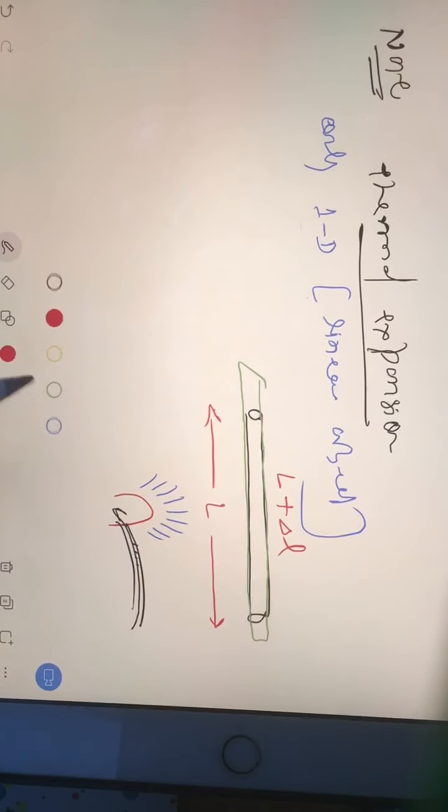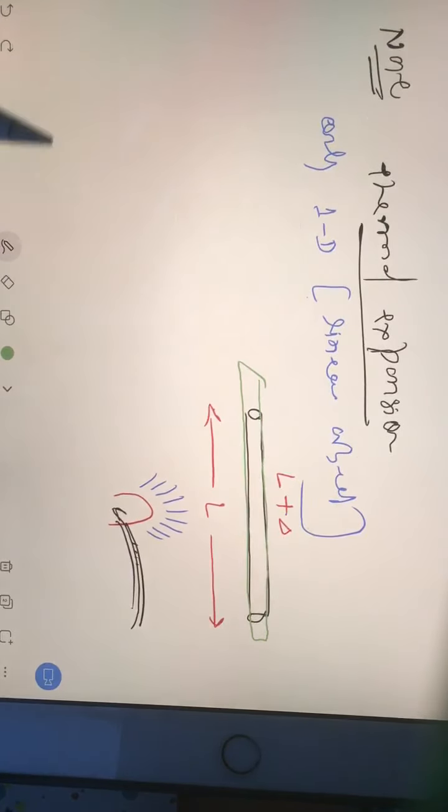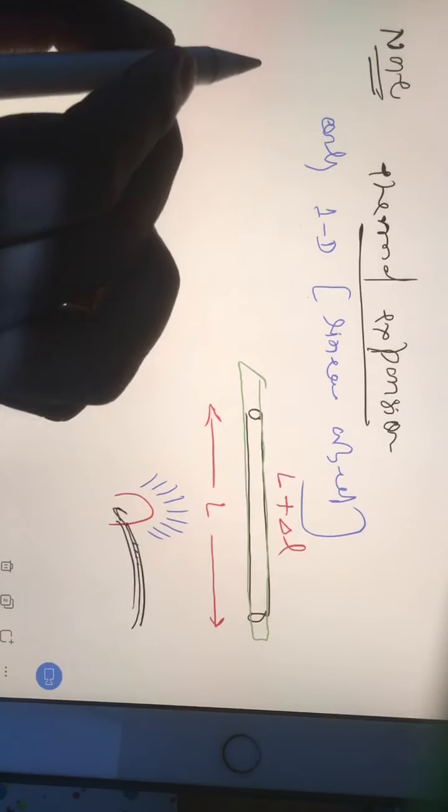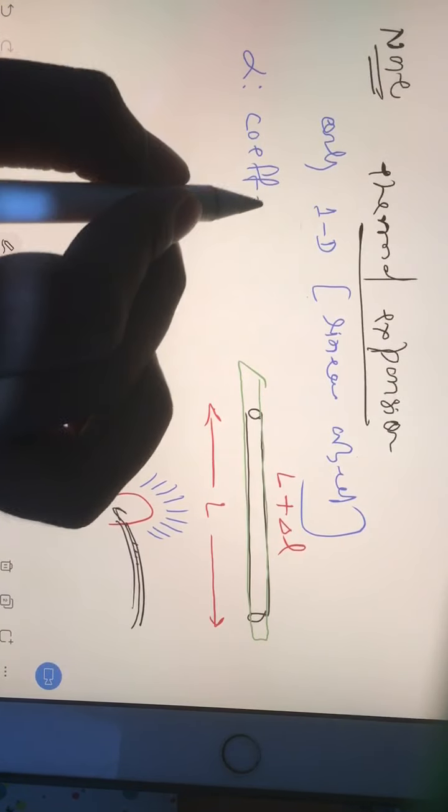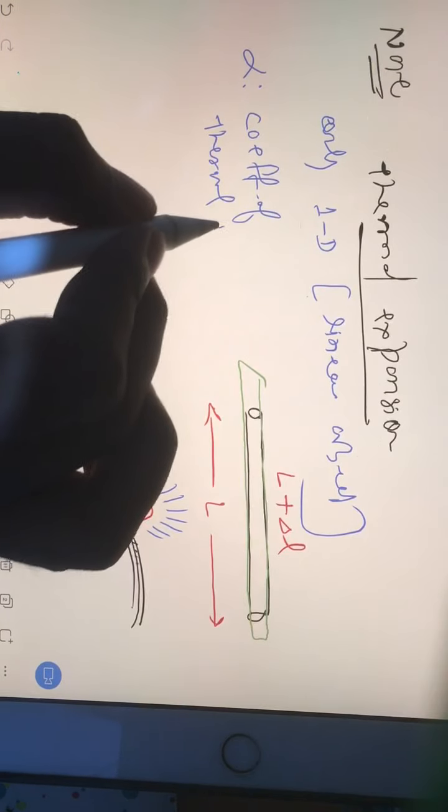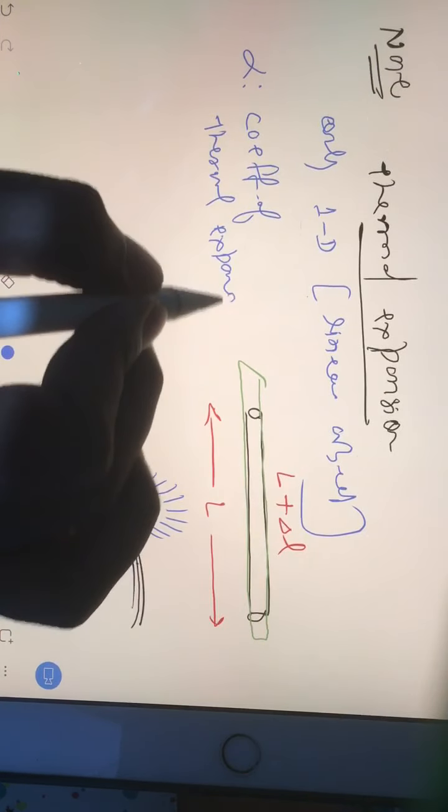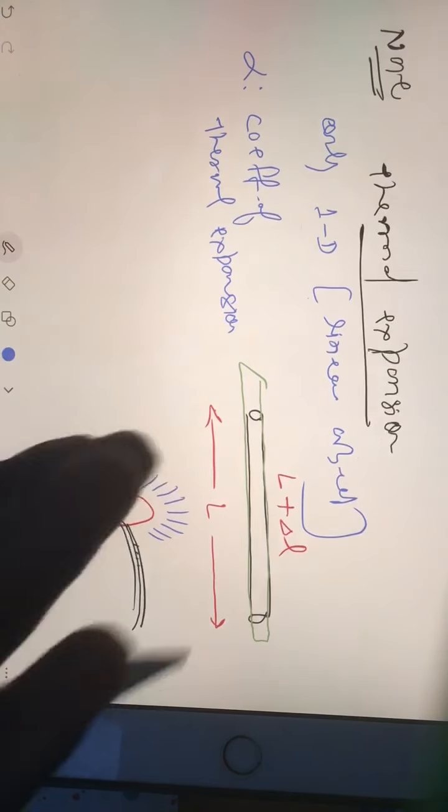I hope this is clear for your understanding. What I'm trying to write is L plus del_l. L is your original length and this is your increment because of thermal expansion. So I have to introduce there is something called alpha. You will say that is the coefficient of thermal expansion. But it is not just a coefficient of thermal expansion - we have three types